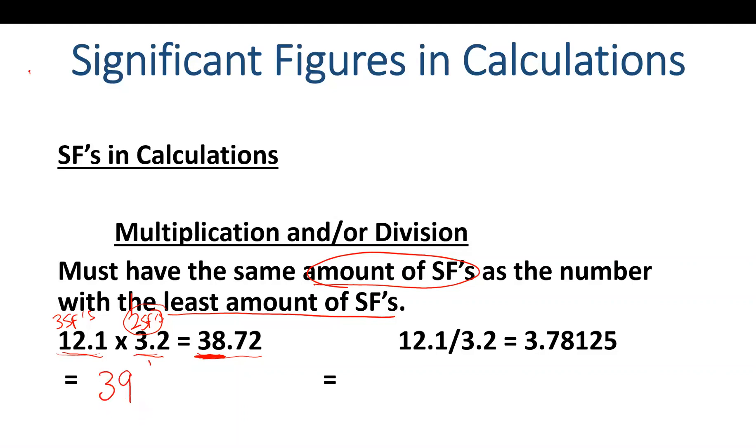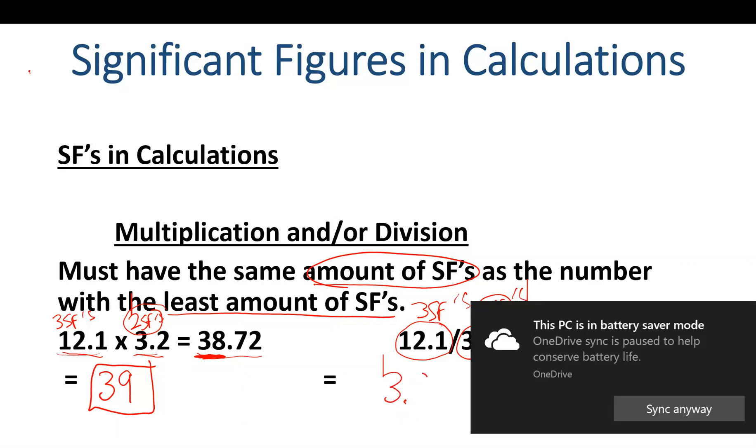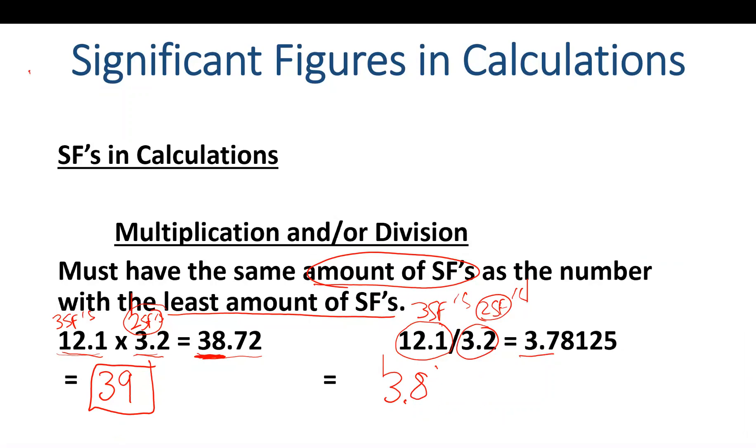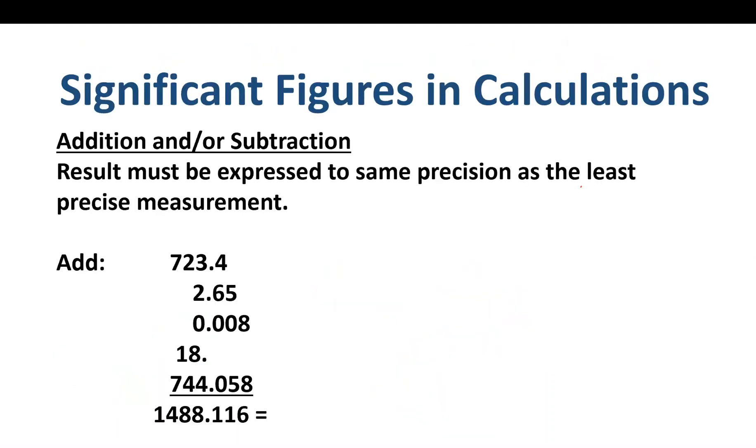Same thing with division. 12.1 divided by 3.2: 12.1 has three sig figs, 3.2 has two sig figs. I plug this into a calculator and get 3.78125. Am I going to write all those numbers? No. Using multiplication and division rules, I pick the least amount of sig figs, which is two. I look one to the right of the second significant figure—it's bigger than five—so I round up. My final answer is 3.8.